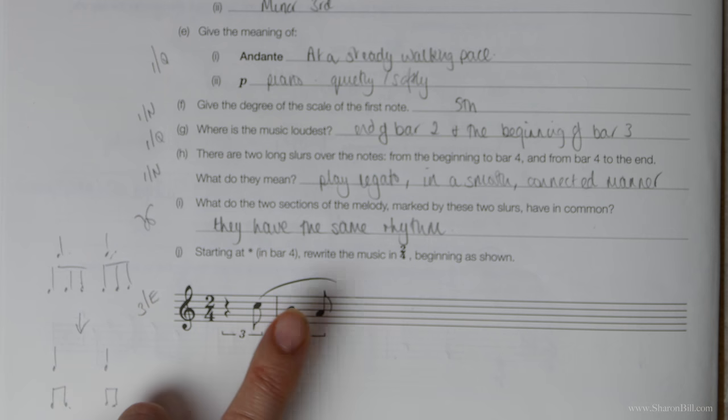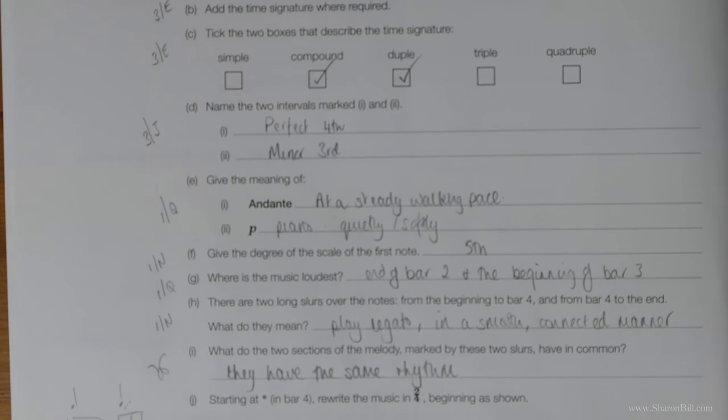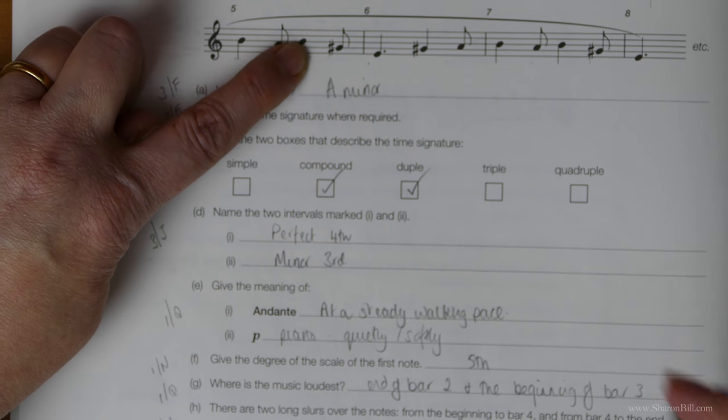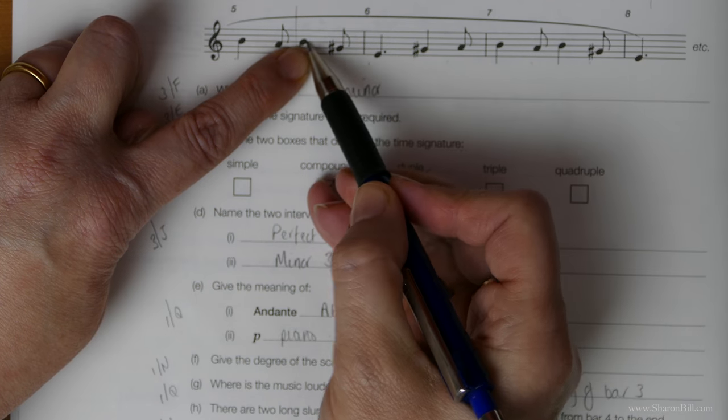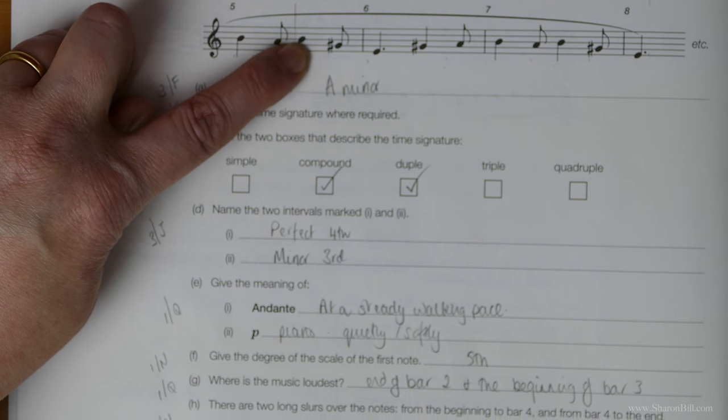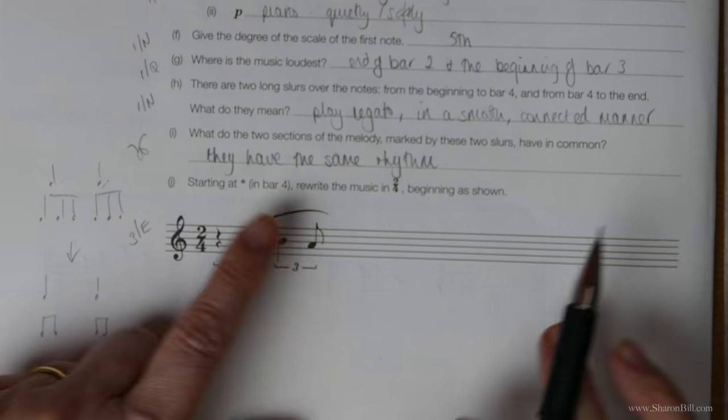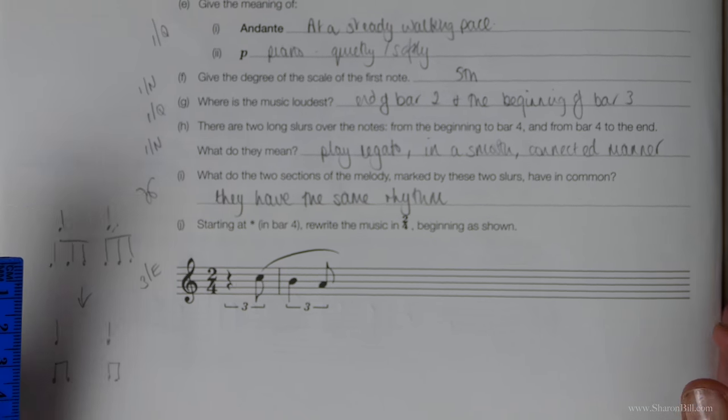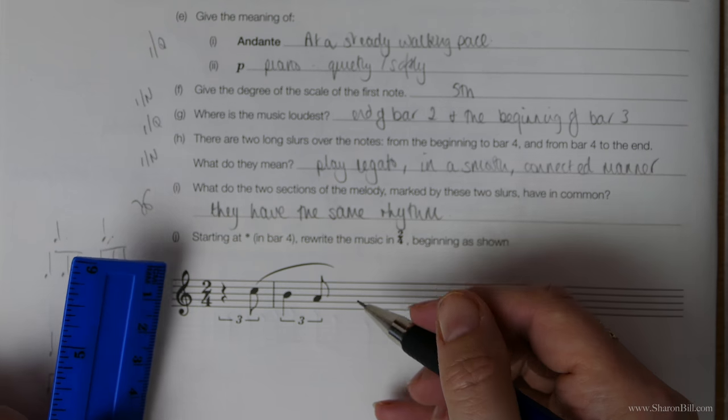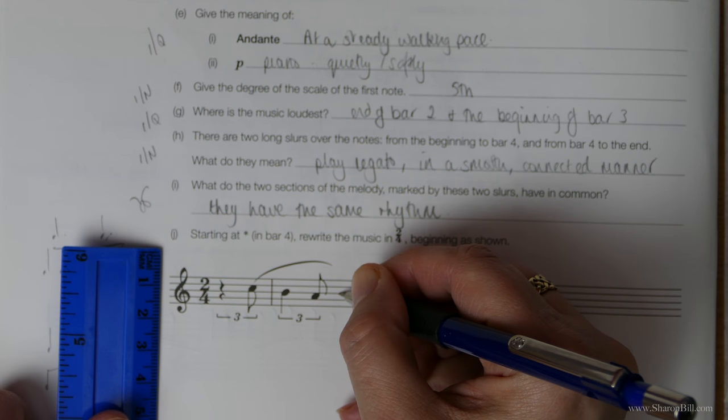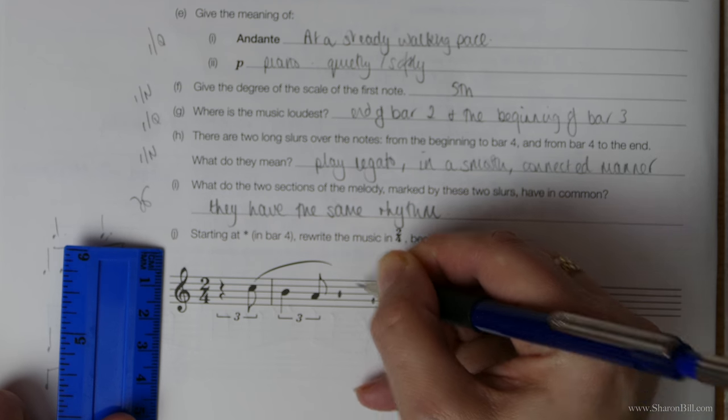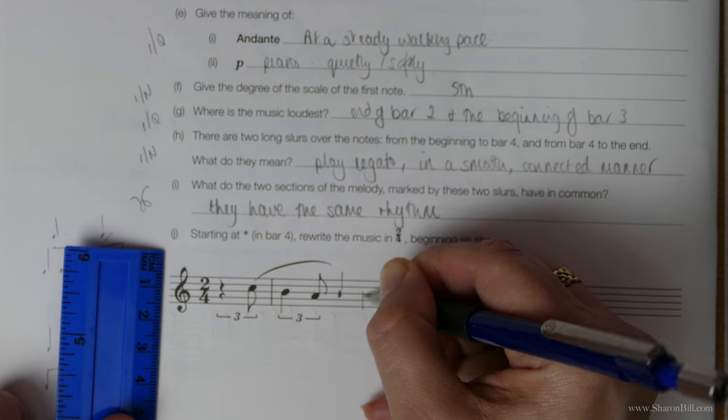And so they've started us off, which is very generous of them. So we've got B, A, so we've got to here. So they've kind of given us to here. We've got to go from here to here, following the pattern that they've generously given us. So let's just see what we've got left to do. So I'll finish this bar.